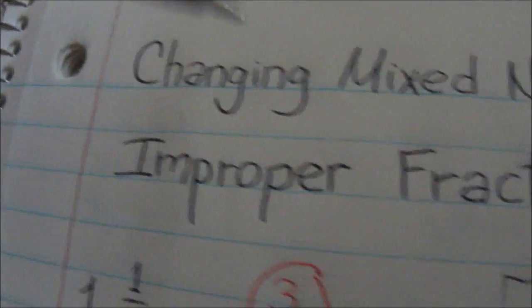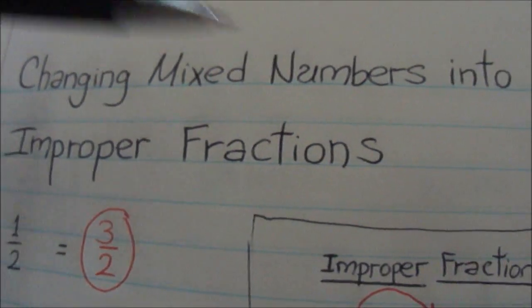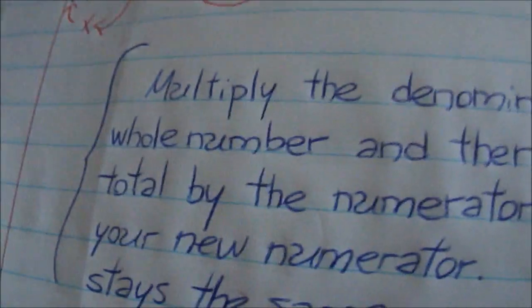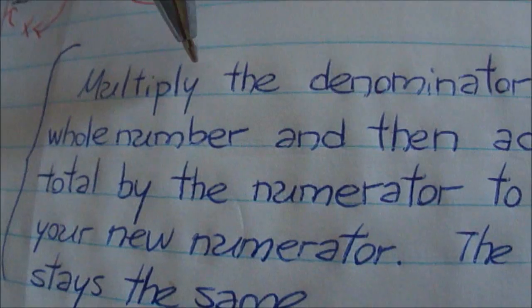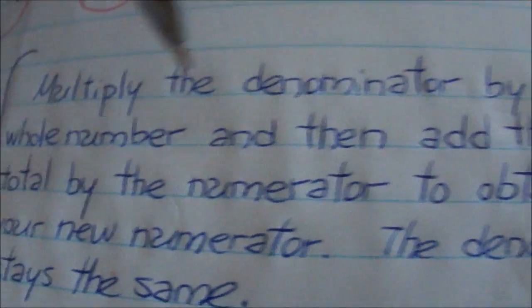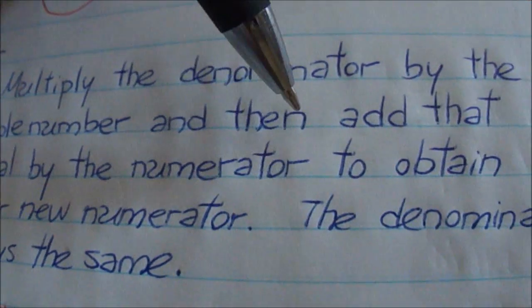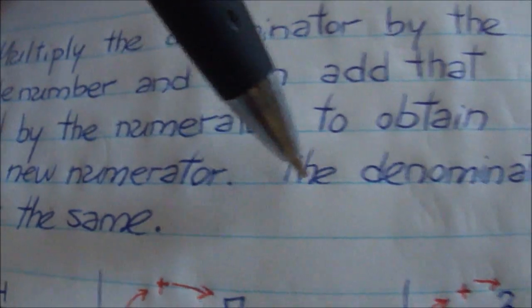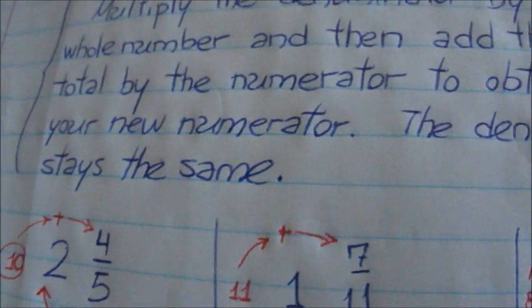Now to convert, to change the mixed numbers into improper fractions, what do we do? I like to remember this. First, you multiply the denominator by the whole number, and then add that total by the numerator to obtain your new numerator. The denominator stays the same.